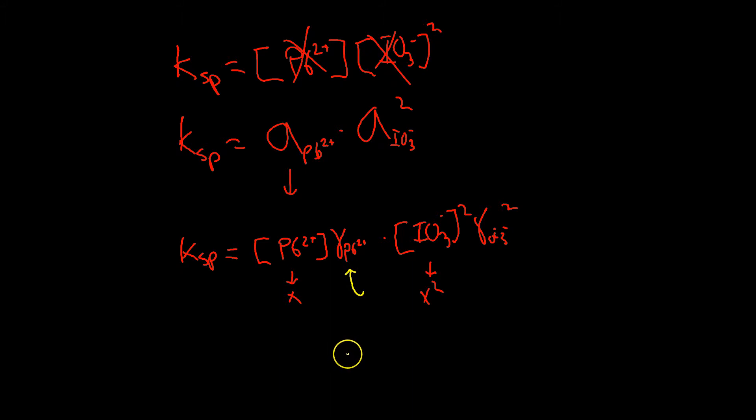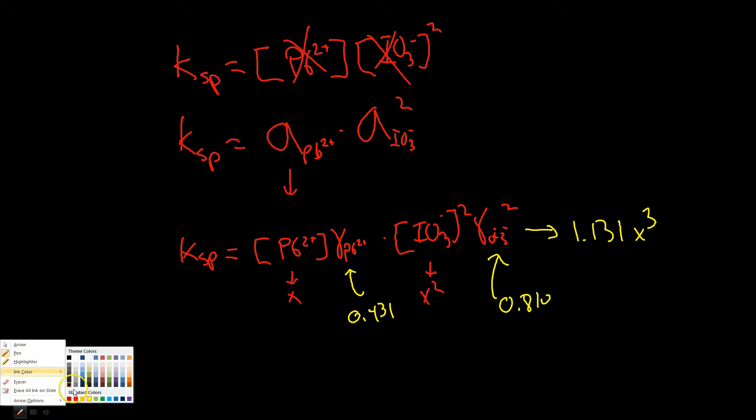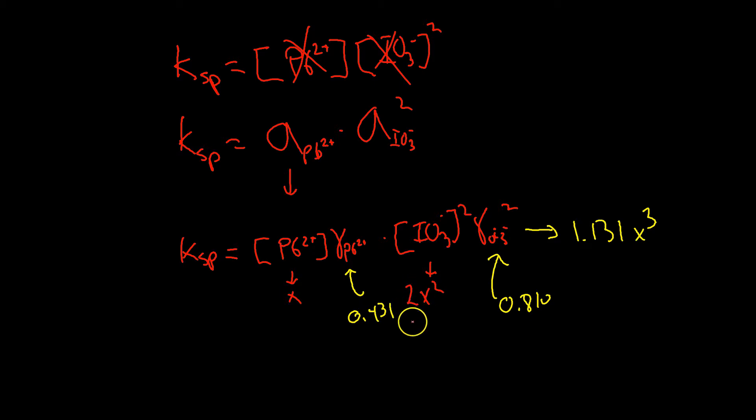We can plug in our values that we found, and this should equal Ksp. Every time we form a lead, we're going to have to form two of our iodates. So this is just going to be x, and this is 2x squared - I hope you noticed I made a mistake there, because we formed this in a 2 to 1 ratio, this is actually 2x squared. We can plug in our values: this is 0.431 and this one is 0.810.